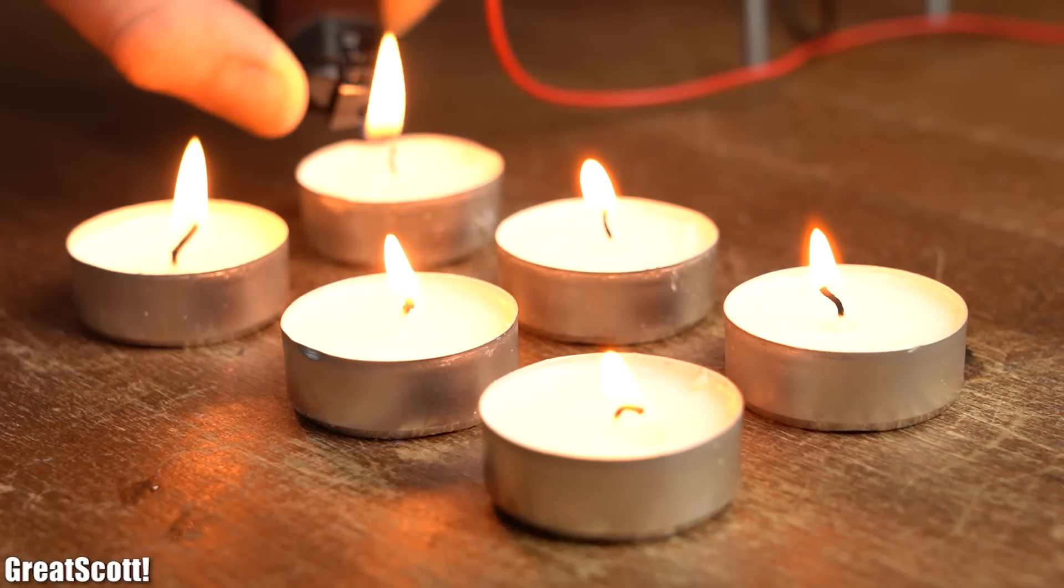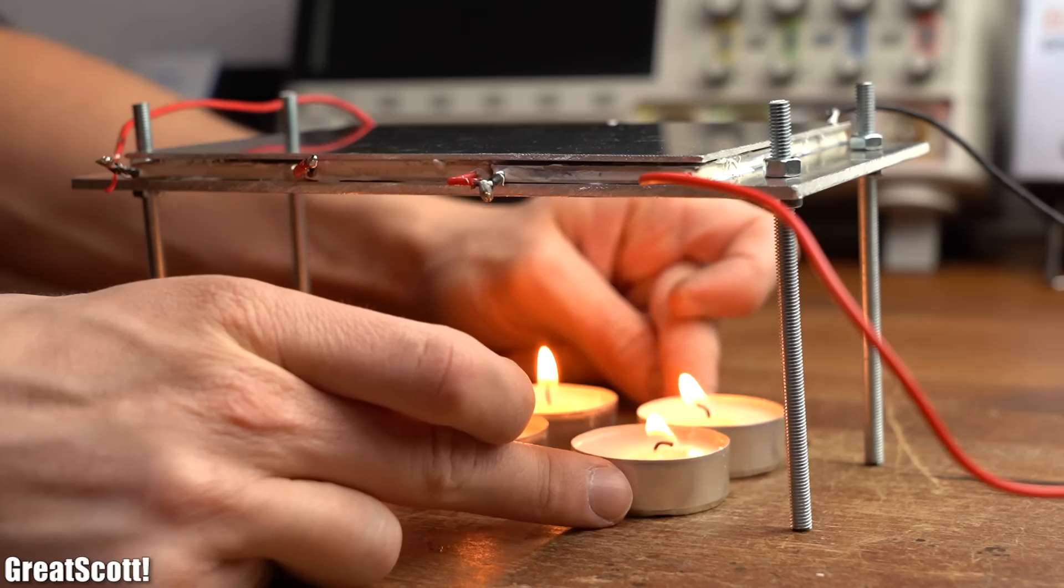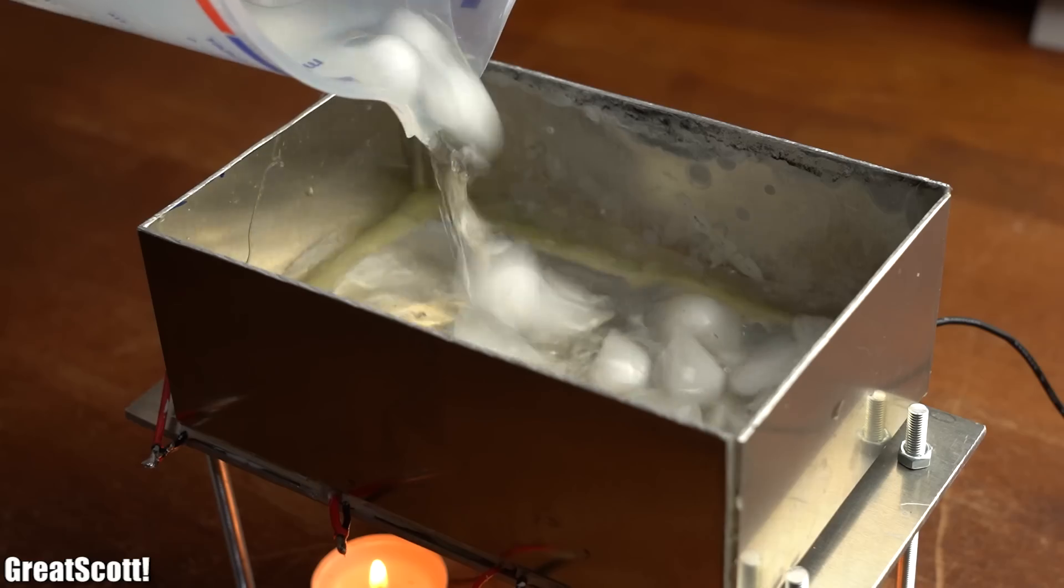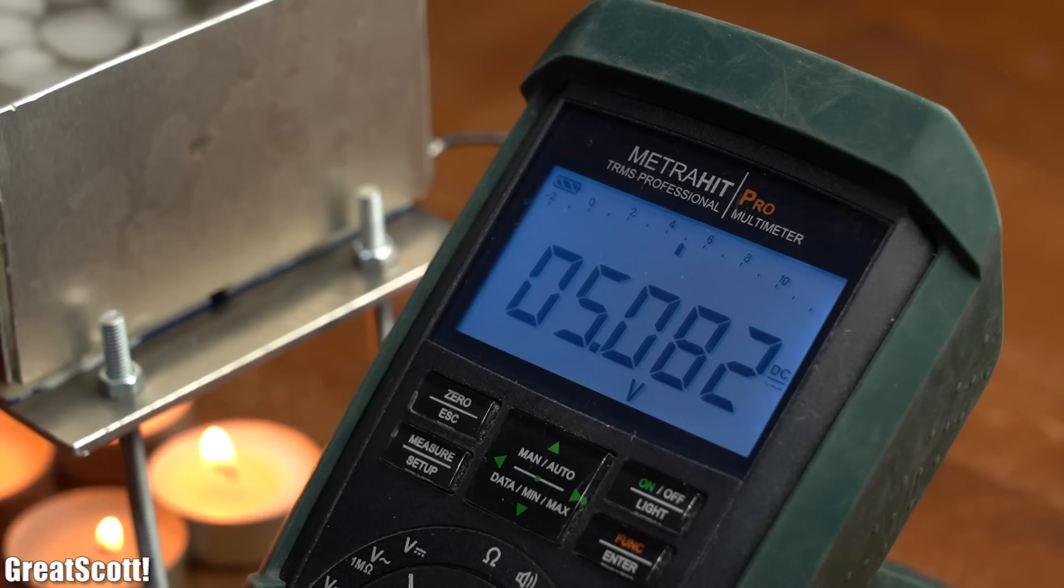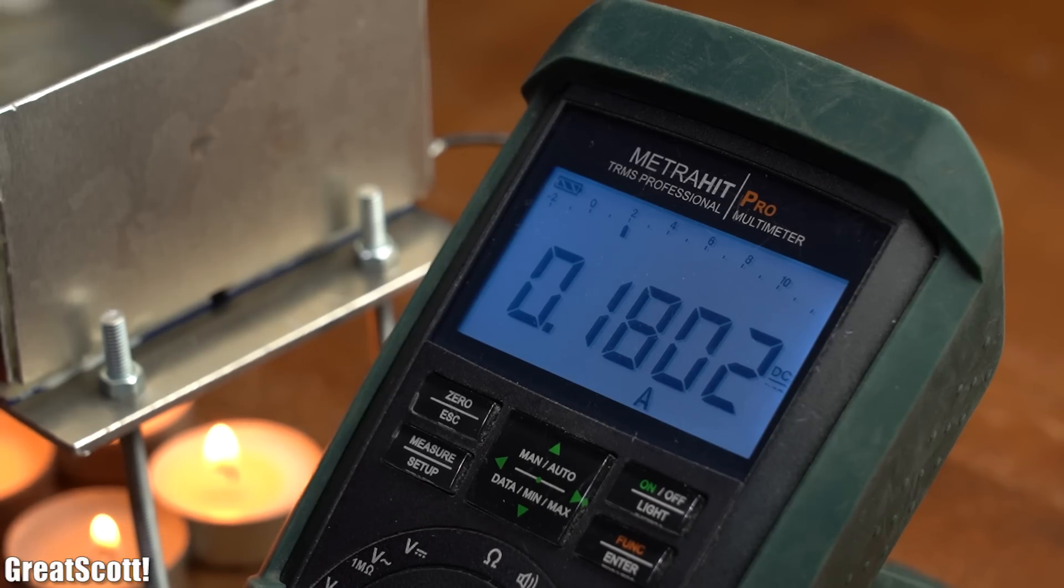That means it was time to light up the tea lights, place the generator on top and pour ice water into the box. And as you can see with this setup we are getting an output voltage of 5 volts and a short circuit current of 180 milliamps which actually wasn't that good.